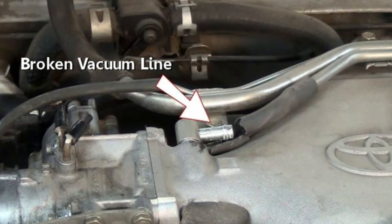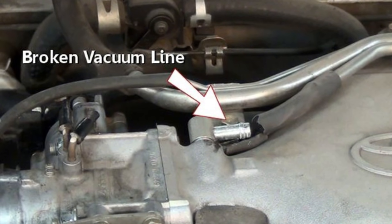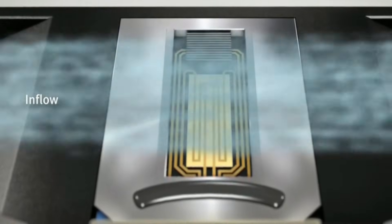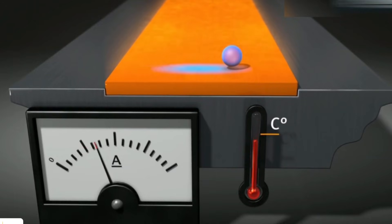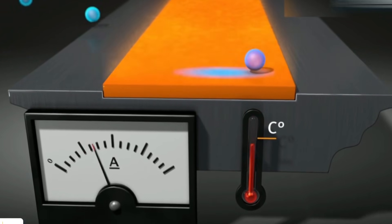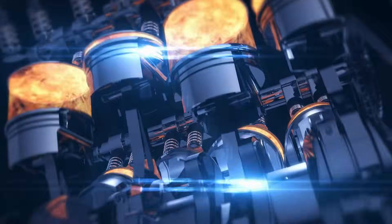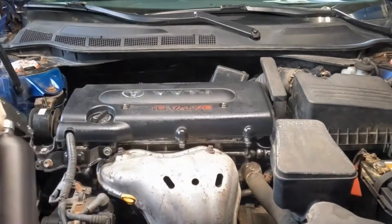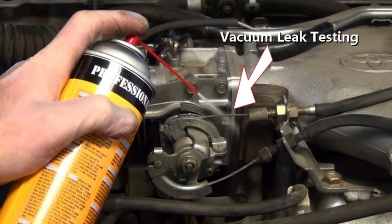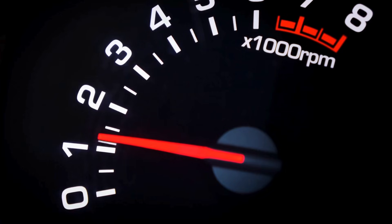Vacuum leaks typically occur due to cracked, loose, or worn vacuum hoses, faulty PCV valves, or leaks in the intake manifold or throttle body gaskets. These leaks allow air to bypass the mass airflow (MAF) sensor, meaning the ECU receives inaccurate data about the incoming air. As a result, the engine may run too lean or too rich, causing inefficient combustion and noticeable performance issues while idling. To diagnose a vacuum leak, you can use simple methods such as spraying brake cleaner around suspected areas — a noticeable change in engine RPM indicates a leak.